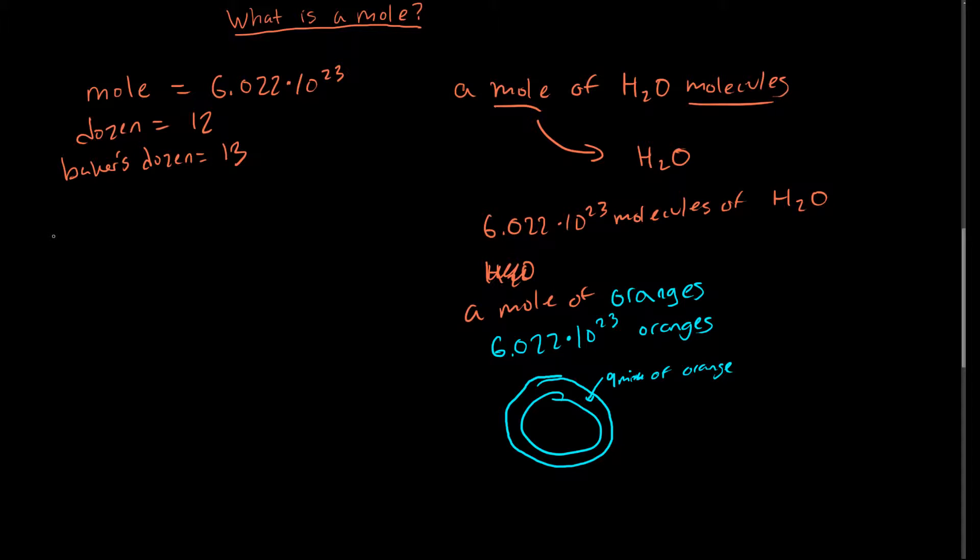Say we have an equation that I've used in videos before. 2H2 plus O2 reacts to create 2H2O. And so this is the reaction between hydrogen gas and oxygen gas to create water. And so what this is saying is for 2 moles of H2 when they're reacted with 1 mole of O2, they react to form 2 moles of H2O.